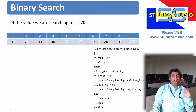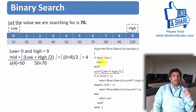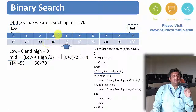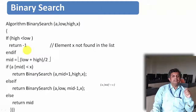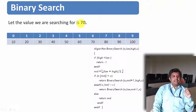Let us see how. Here the algorithm takes parameters a, low, high, and x. Now, here low is 0 and high is 9. As high is not less than low, we are not going to the if part; we are going to find the mid value. So mid value is (low + high) / 2. Low is 0, high is 9, so mid value becomes 4. The value at the fourth element is 50, and 50 is less than 70. The value 70 we are searching. Here is an array given with 10 elements and we are searching the value 70.